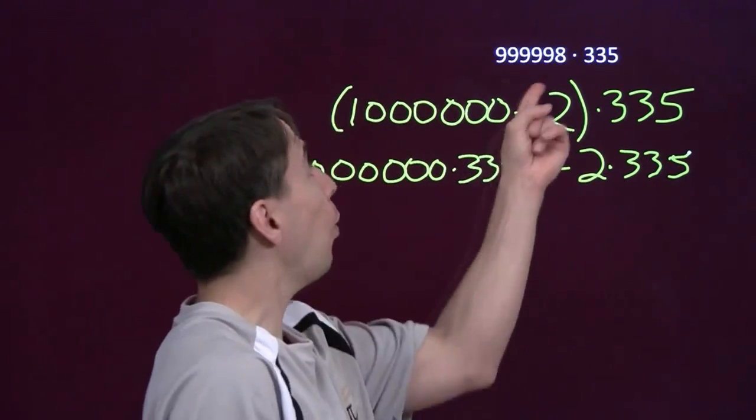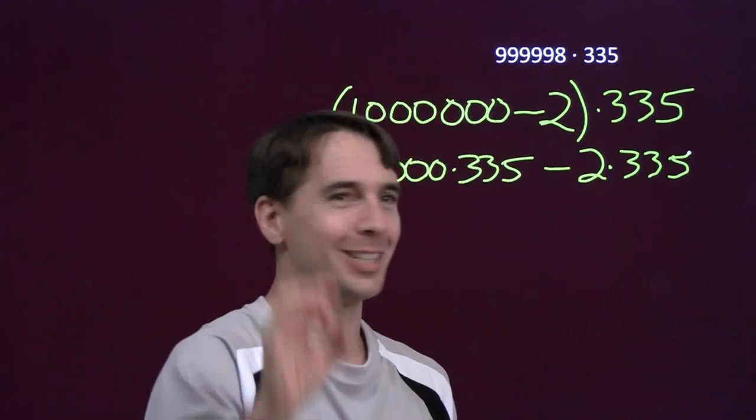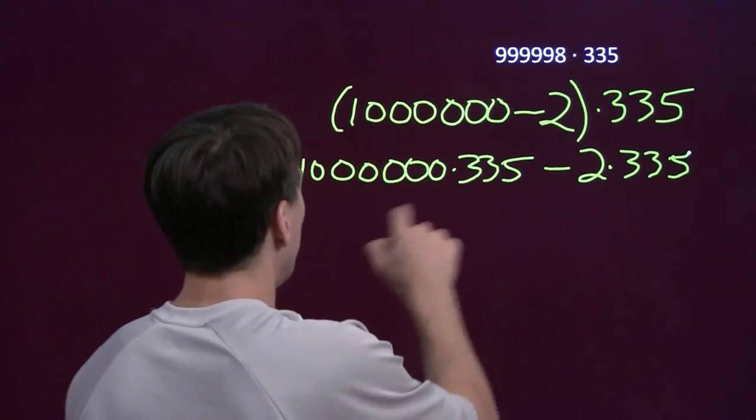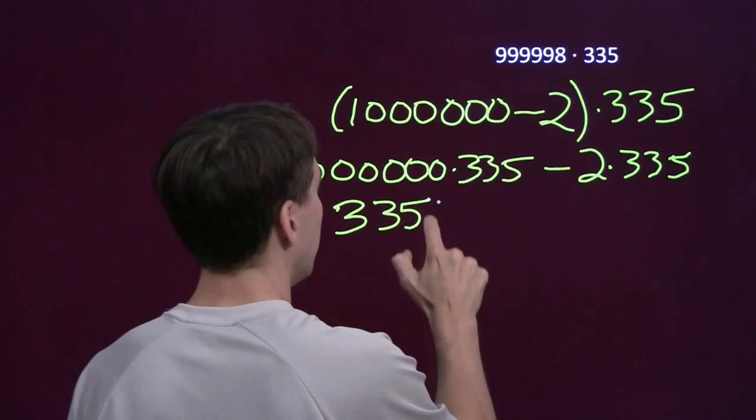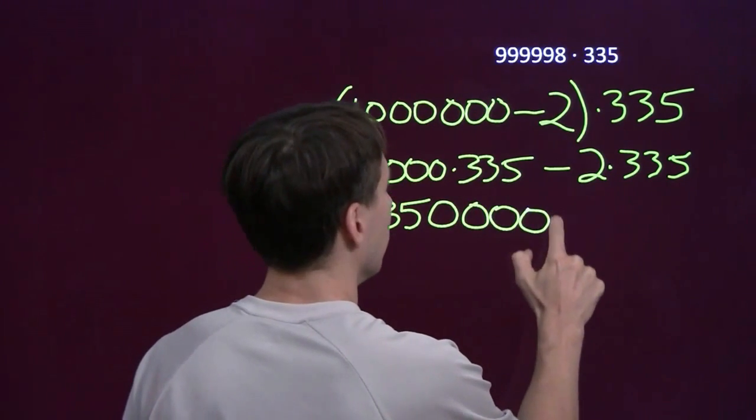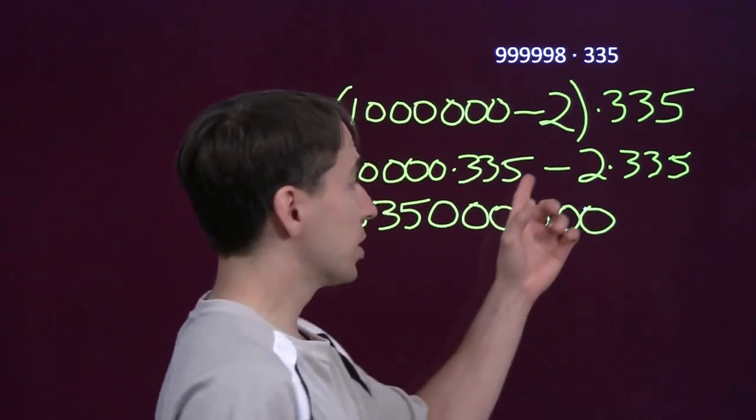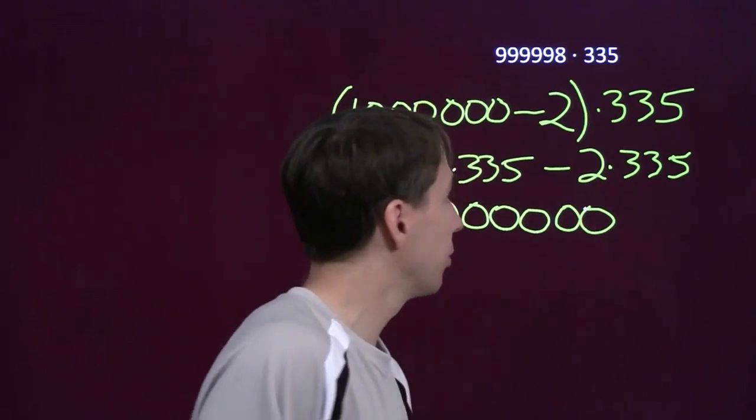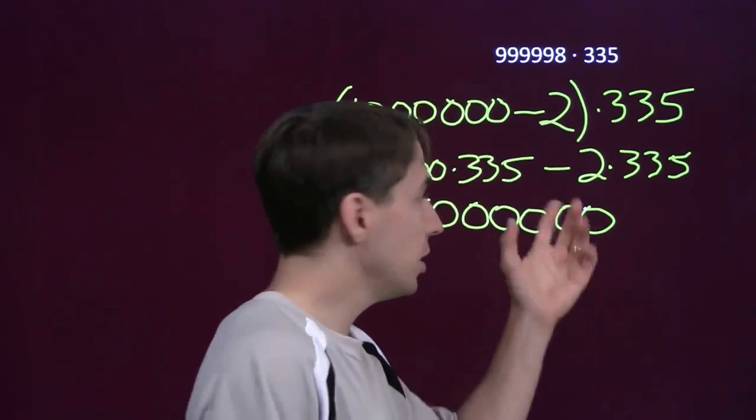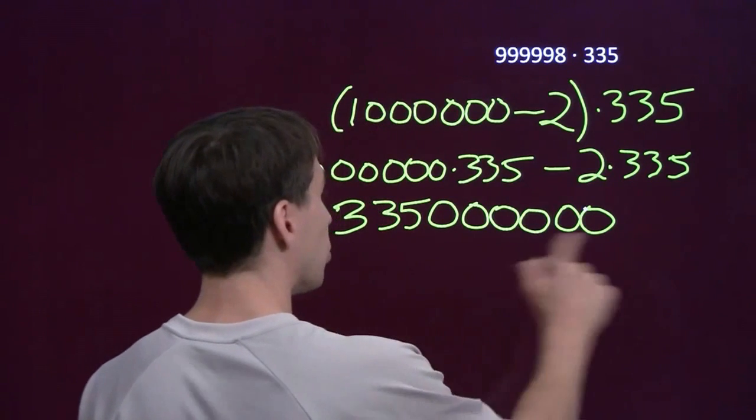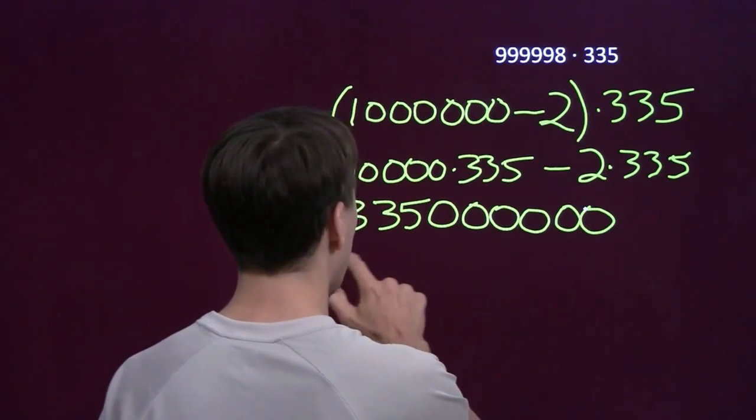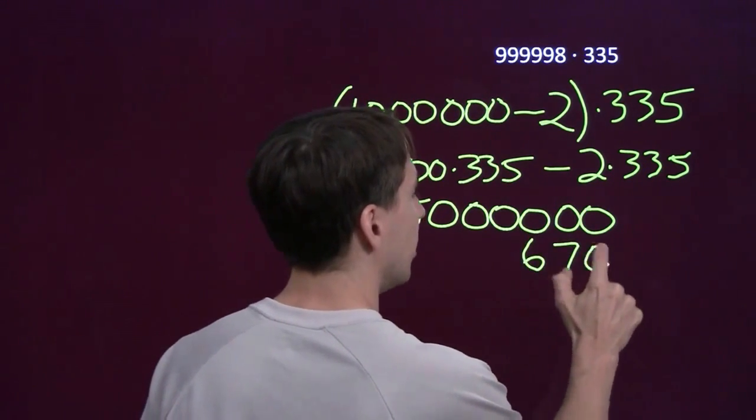These products are easy, they're way easier than that. This is a lot less work, we like a lot less work. So we multiply these, multiplying by a million, that's easy. We just throw on a bunch of extra zeros, that's three-hundred and thirty-five million. And we're going to subtract from that two times three-hundred and thirty-five, that's six-hundred and seventy. Two times three-hundred is six-hundred, two times thirty-five is seventy. So we're going to have to subtract from this huge number, we're going to subtract six-hundred and seventy.